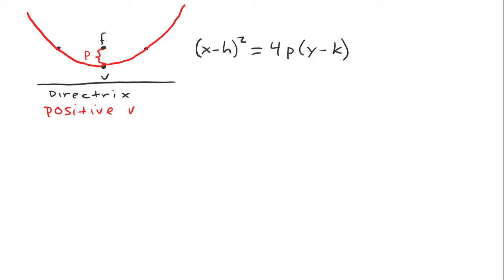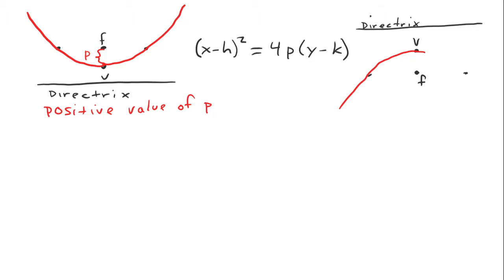For a negative value of p, we draw a very similar diagram. We still have a directrix and a focus that's a point not on the directrix, but now it's below the directrix instead of above. The vertex is still midway between the focus and the directrix, and the ends of the latus rectum are still the same distance to either side of the focus as the focus is away from the directrix. This allows us to draw a parabola that opens downward. p is the distance that the focus is above the vertex; if the focus is below the vertex, p is a negative number — so this is what the parabola looks like with a negative value of p.